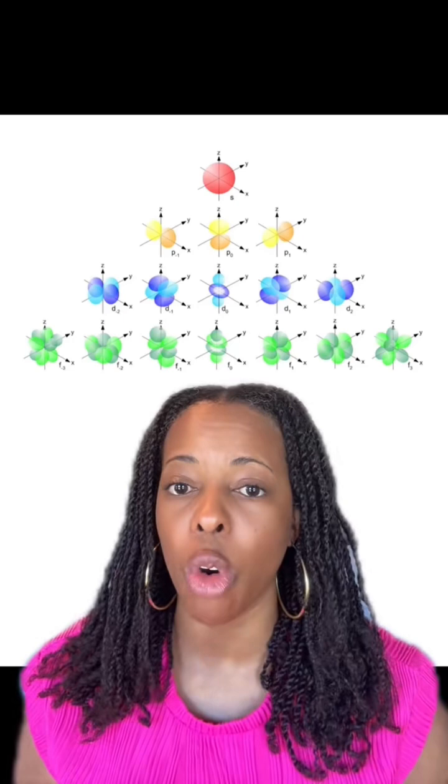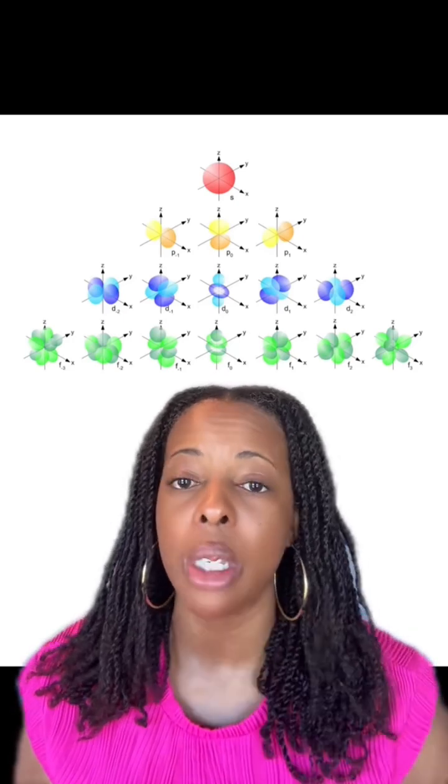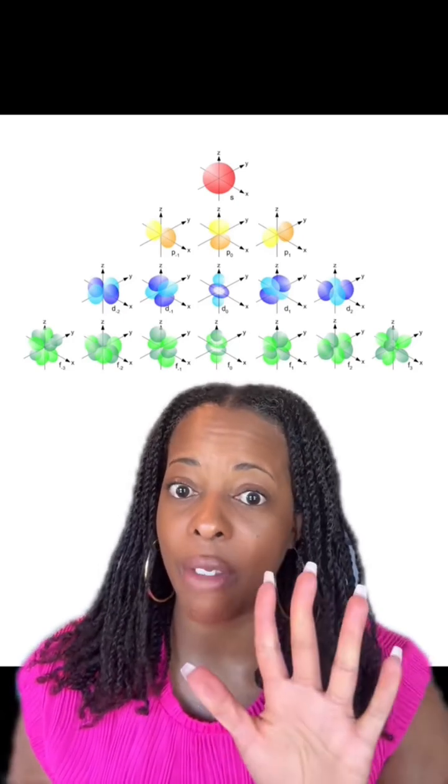The second row is our p orbitals, and you can see there are three different types. The third row is our d orbitals, and you can see there are five different types.